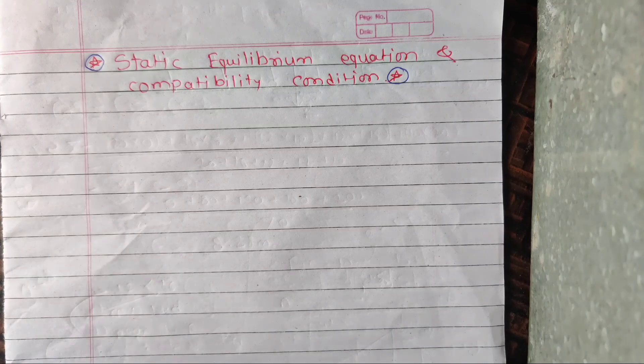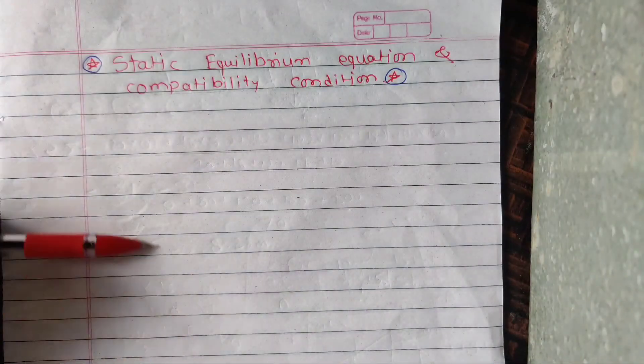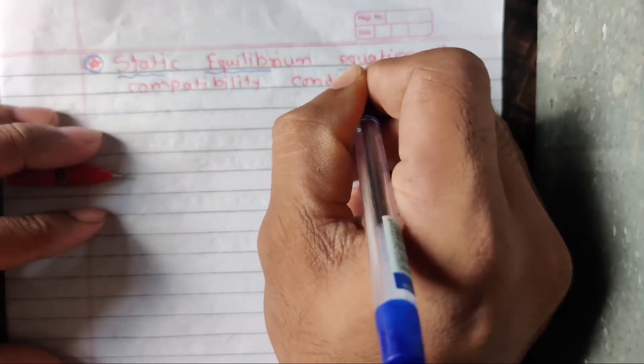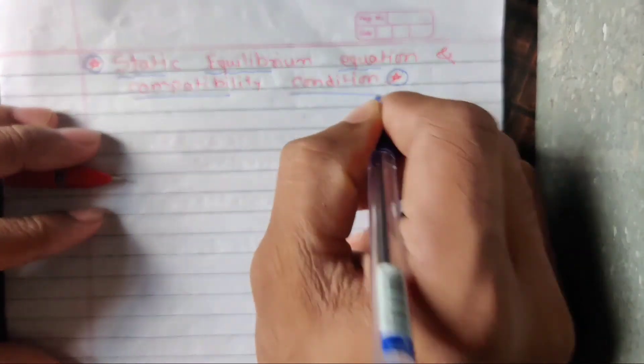Hello guys, welcome to the Civil Engineering Guide. In the previous video we discussed types of joints and support reactions. In this video we are going to understand static equilibrium equations and compatibility conditions, so let's start.